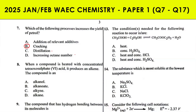When a compound is heated with concentrated H₂SO₄ it produces an alkene. That compound is an alkanol, because when an alkanol reacts with concentrated H₂SO₄ at high temperatures, the reaction is a dehydration reaction.